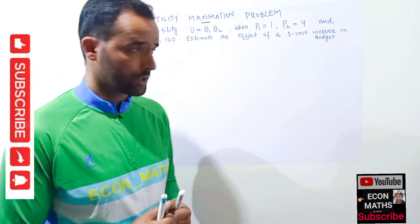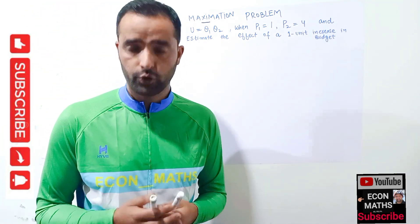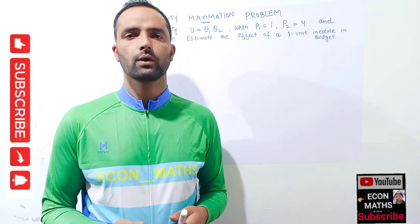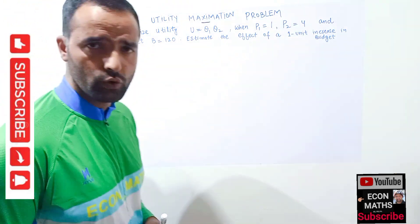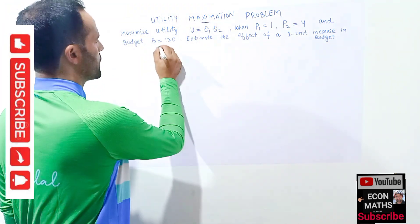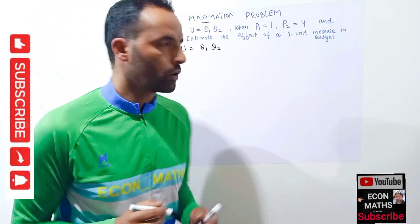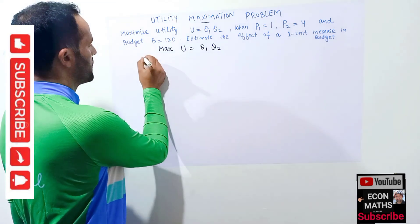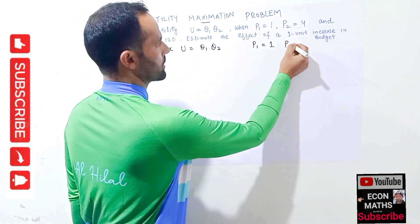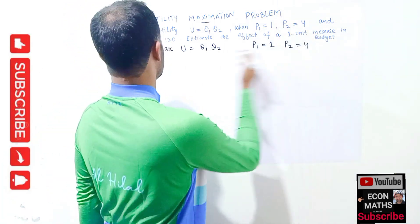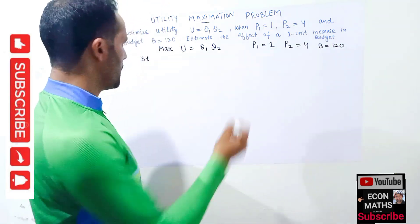We need to find out the optimal commodities that this consumer will choose. Also, we need to find out the effect of a one unit increase in the budget on utility — that is, what happens to the utility of a consumer when there is a one unit increase in the budget. We want to maximize our utility function subject to the budget constraint. The income of the consumer is denoted by B, which is equal to 120 dollars.